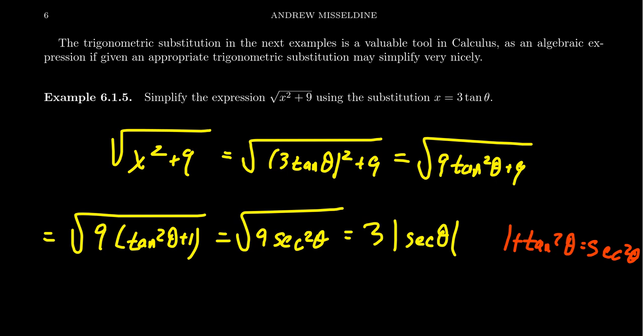So without any information about the quadrant, we would just say 3 times the absolute value of secant. Although, in the context in calculus which you would use this technique, for the most part, you could assume the quadrant is the first quadrant. Basically, you can basically drop the absolute value without much problems. But without that context, we will keep it up just to be proper.